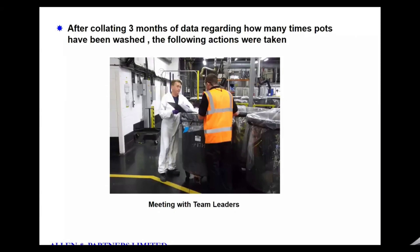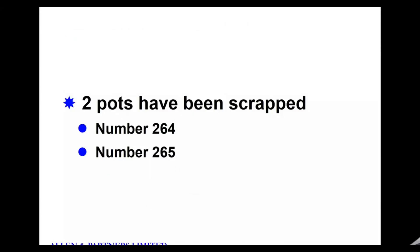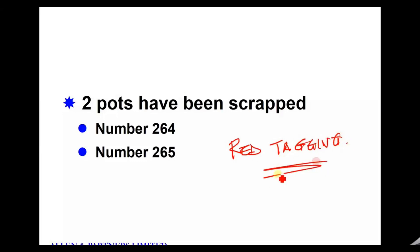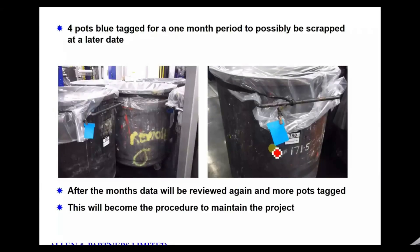After three months of data collection on how many times pots were being washed, two pots — 264 and 265 — have been scrapped because they weren't being used at all and didn't need to be in the system. There'll be others that will go, but now they're in control of the process. This is essentially a red-tagging process in 5S terms — they actually use blue tags, but the colour doesn't really matter as long as everybody knows what we're doing.